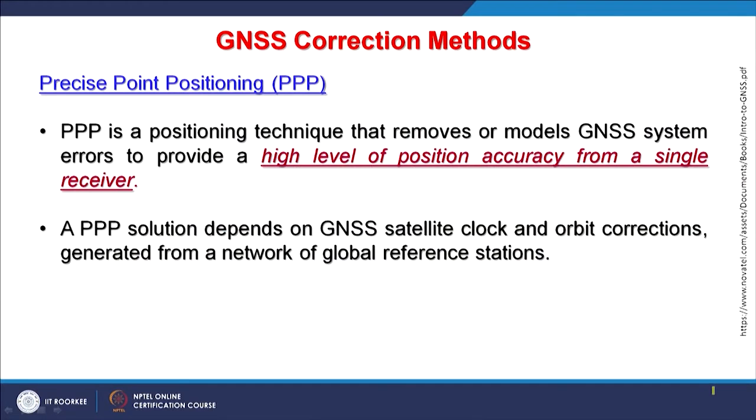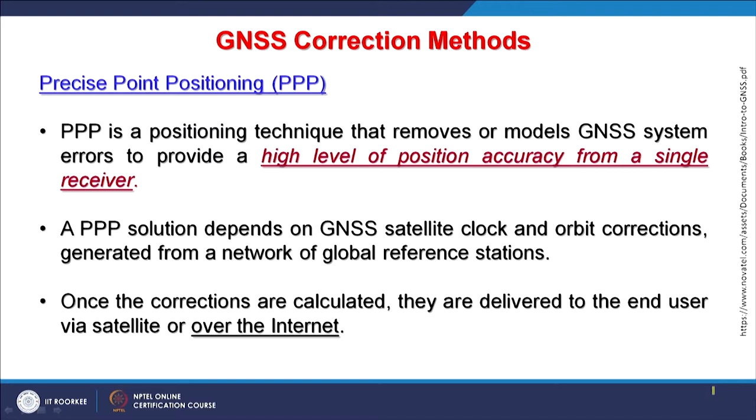This PPP solution basically depends on the GNSS satellite clock and orbit corrections, and these are generated from a network of global reference stations. If some country, through the United Nations or the world community, or through private companies, installs such reference stations, then these reference stations can transmit the corrections which can reach end users having a single receiver.